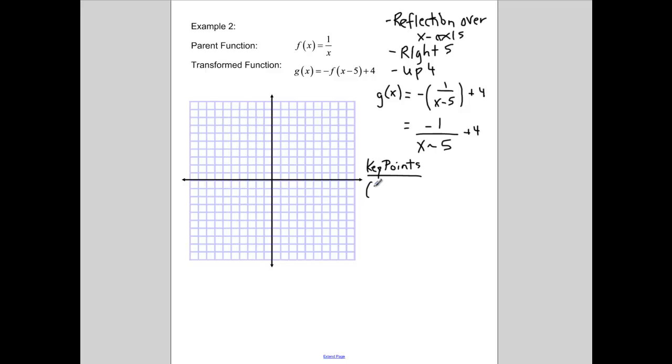Okay, so we have the key point here at (1,1). We have (2, 1/2). And then we have (1/2, 2). And then the other 3 key points are the same thing, but just the negatives of each of them. So, (-1,-1). We've got (-2, -1/2). And we've got (-1/2, -2). So, these are all going to get mapped to their new spots.